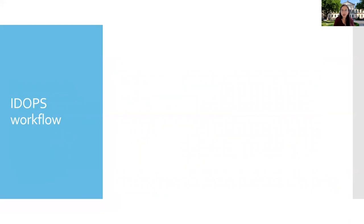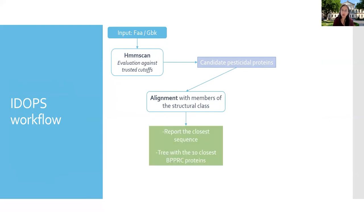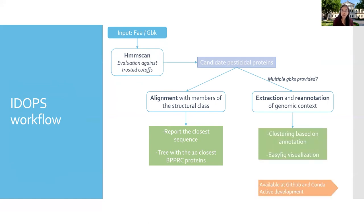This is the workflow of IDOPs. It can take in protein sequences in FASTA format or as part of a GenBank file. It runs HMM scan and evaluates the resulting scores against the defined trusted cutoff values for each model. Then it generates a list of candidate pesticidal proteins. Those proteins are aligned with the other members of the structural class and the closest sequences reported along with a tree with the 10 closest proteins. If multiple GBKs are provided, IDOPs extracts and annotates the upstream and downstream regions of the coding gene, then does a clustering based on annotation and creates an ECFIC visualization. IDOPs is available over Conda and over GitHub and it's under constant development.